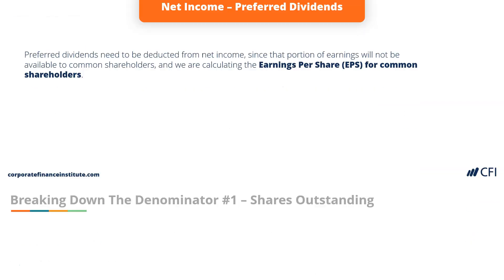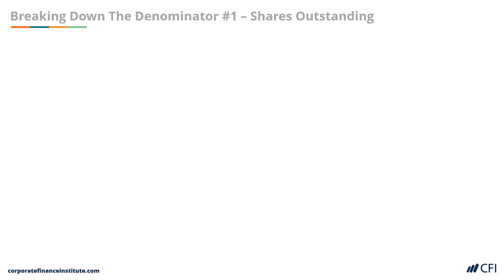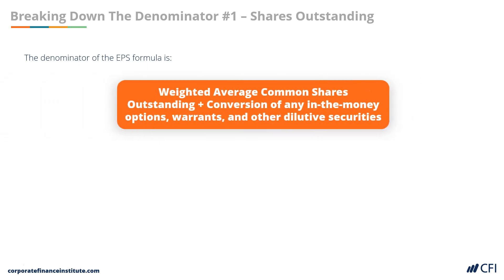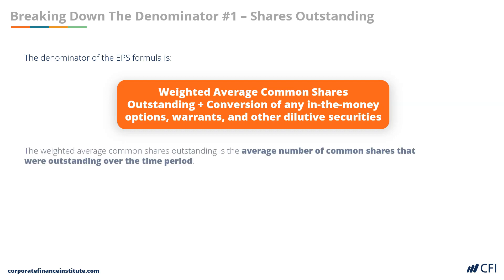Next, let's look at the denominator. The denominator is weighted average common shares outstanding, plus any convertible in-the-money options, warrants, and other dilutive securities. Remember that the weighted average common shares outstanding is the average number of common shares throughout the period.